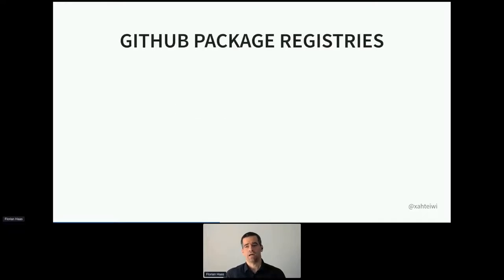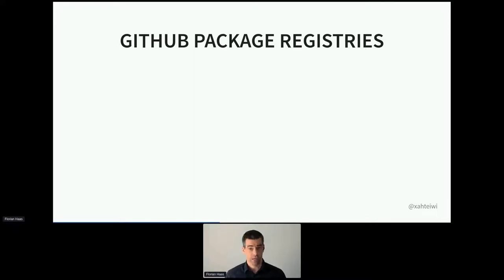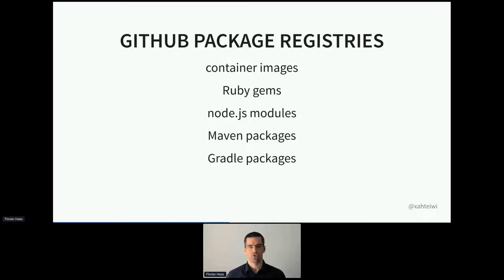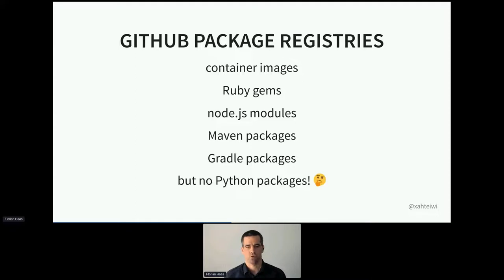GitHub also includes the ability to maintain your own package registry and push artifacts to it from your workflow. GitHub's definition of packages includes container images, RubyGems, NPM modules, and a few others. Interestingly, it doesn't include Python modules, so you don't get a PyPI work-alike directly from GitHub, although you can push to PyPI from a GitHub Actions workflow.